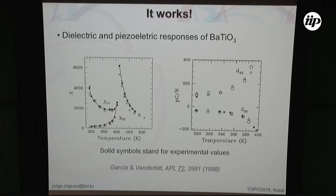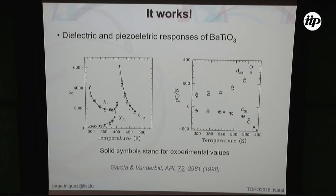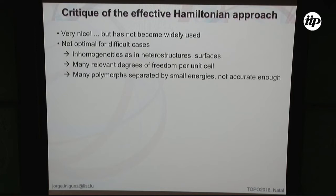You can compute responses and see here the electric susceptibility — a very beautiful near-divergence at the transition temperature, and clear symmetry breaking. The three diagonal components split into two different components, parallel and perpendicular to the polarization. The solid symbols are experimental values and the open symbols are theory, and you can see this is doing something very well. Here you also have the result for piezoelectricity — it works, it really works. So this is a very nice approach that has been used over many years with great success.